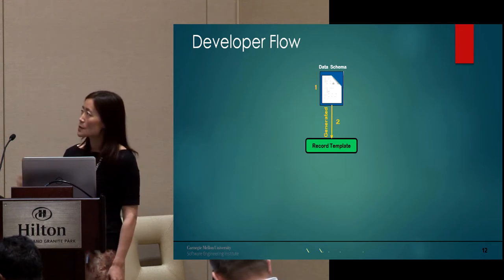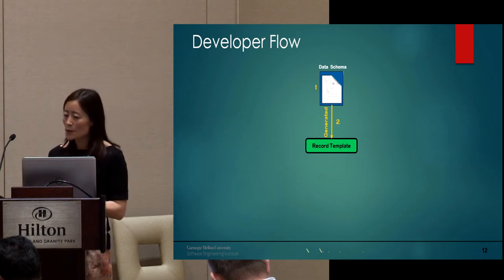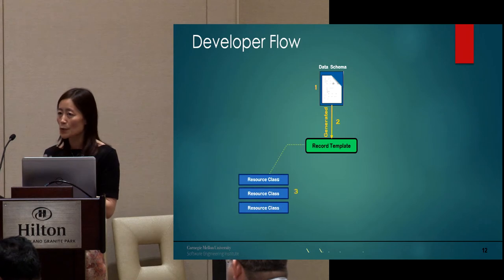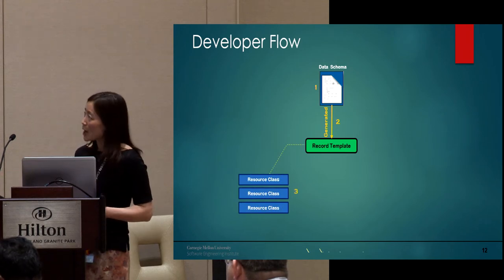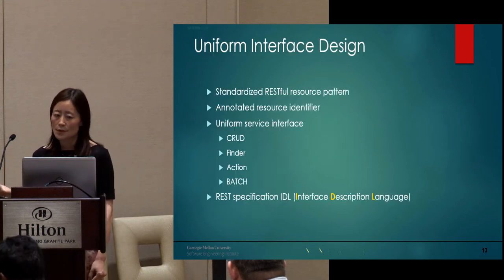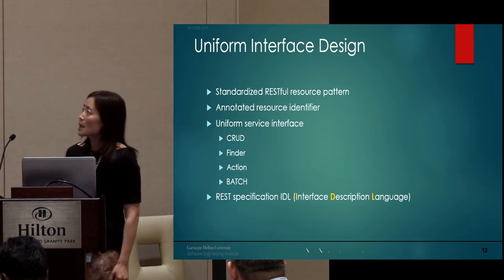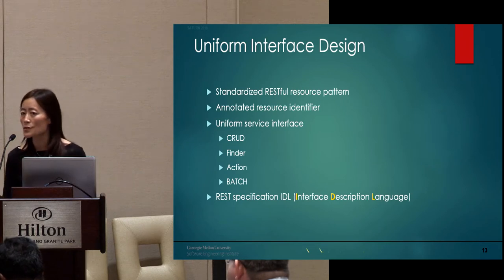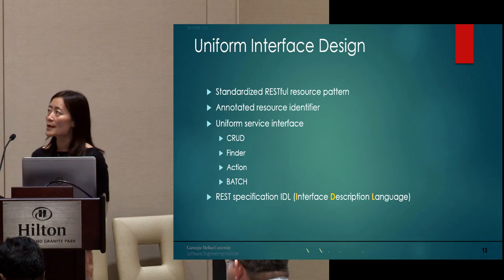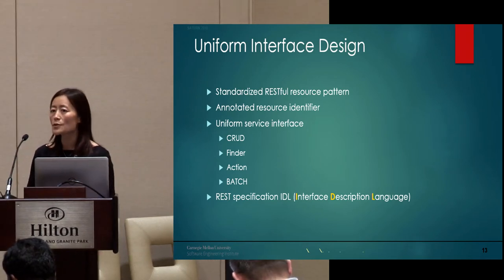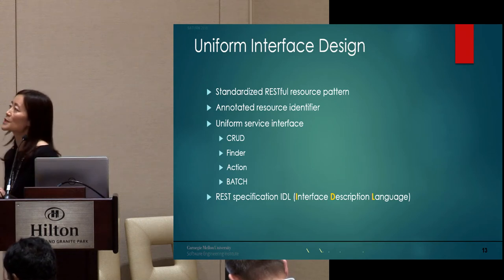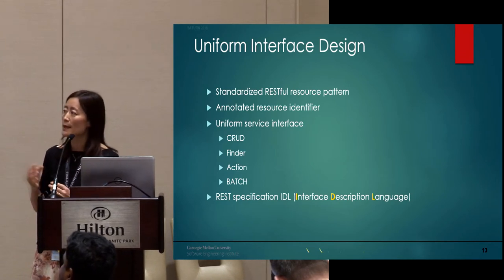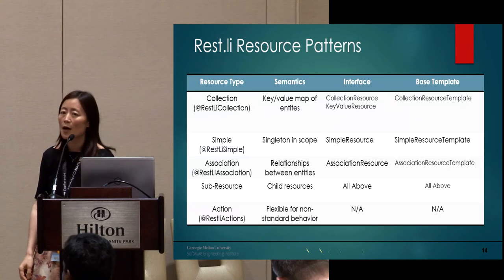After you define your data model, Rest.li automatically generates a language-specific model-like class called a record template. Record templates serve as the source of truth for data model bindings between your client and the server. Now the server developer is ready to provide your resource class — you implement your REST resource and define what operations you want to support. Rest.li fosters a uniform interface design, making it easy to develop REST resources even for non-experts. The service resource contract is formally communicated through a standard interface description language file called the REST spec IDL.